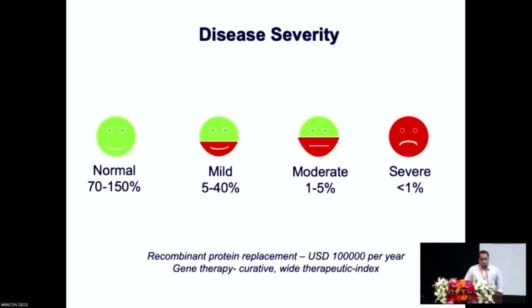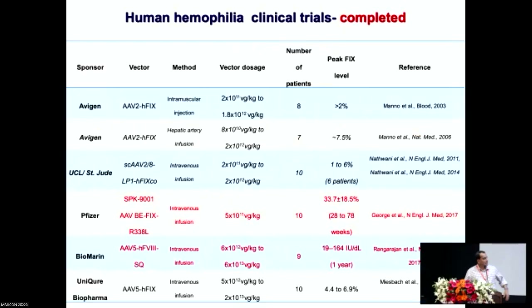Many studies have been conducted for gene therapy of hemophilia, and this table captures some of them. What is more interesting are the recent trials — for example, those conducted by Pfizer and BioMarin for hemophilia A or hemophilia B — which have reported fantastic data. From patients with severe hemophilia, you are able to convert them into somebody with mild hemophilia, and there are even supraphysiological levels of factor 8 in one of these studies.